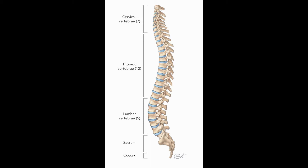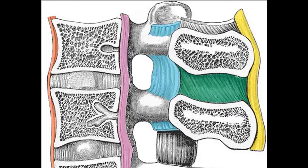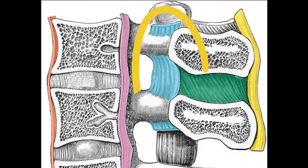We have 33 individual bones: seven cervical vertebrae, 12 thoracic, five lumbar, five sacral, and four coccygeal. The spinal cord is protected by two main ligaments.